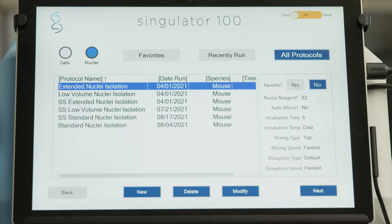Select the option for nuclei isolations. Select the All Protocols tab to view all of the available protocols or select from Favorites or Recently Run.